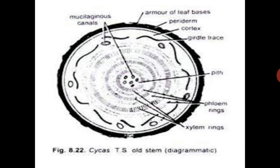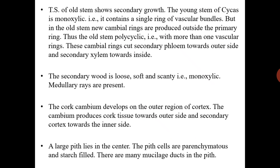After secondary growth, the old stem shows phloem rings, xylem rings, and a central large pith containing miscellaneous canals. Leaf bases and periderm are present along with cortex. The transverse section of the old stem shows secondary growth. The young stem of Cycas is monoxylic with a single ring of vascular bundles, but in the old stem, new cambium rings are produced outside the primary ring. Thus the old stem is polycyclic, with more than one vascular ring.